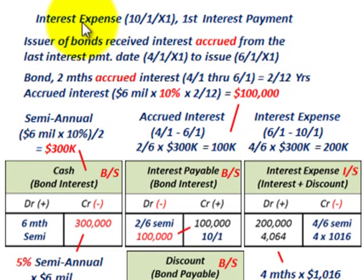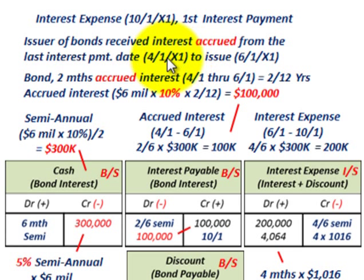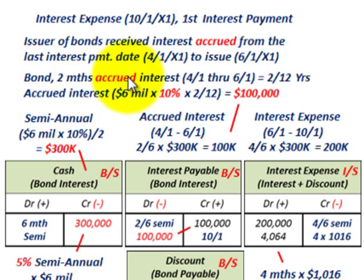For our example, the interest expense as of 10-1-X1 — that's the first interest payment date after the bonds were issued. This is the key: the issuer of the bonds receives the interest accrued from the last interest payment date. In this case, that's from when it would have been paid on 4-1-X1 — the stated date on the bond — to the issue date, 6-1-X1. So we have two months where the issuer of the bond is going to receive interest in advance. The buyer of the bond pays this interest to the issuer, and then the buyer gets it paid back at the next interest payment date.